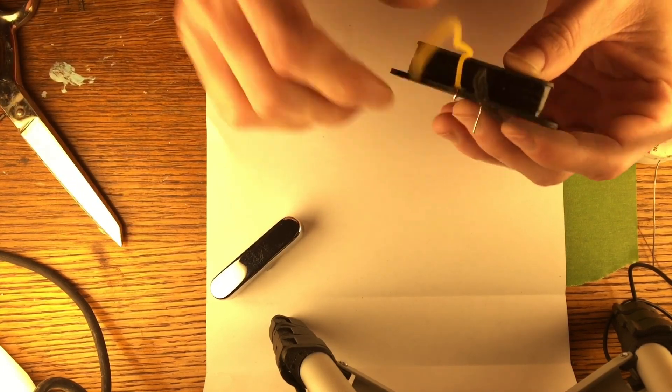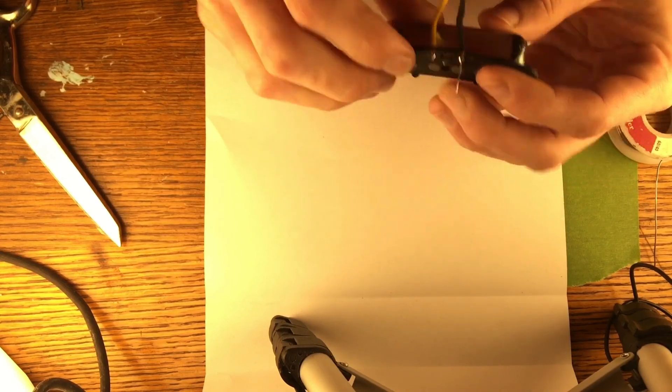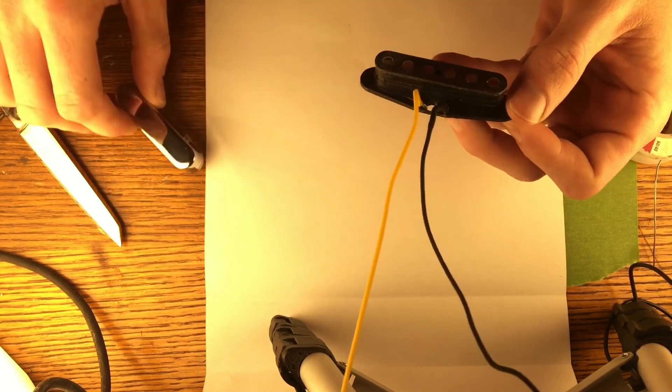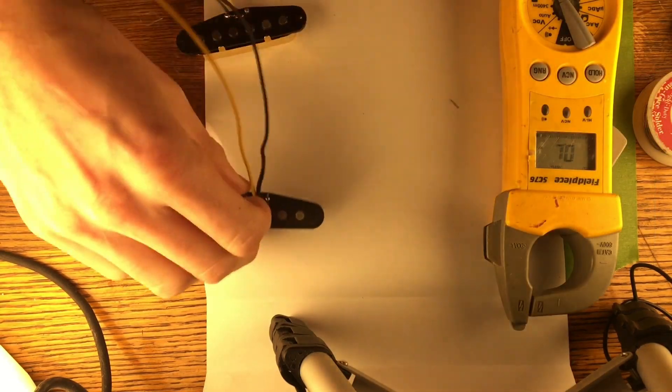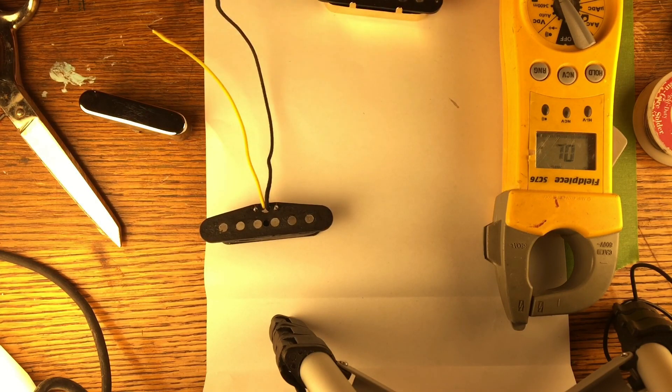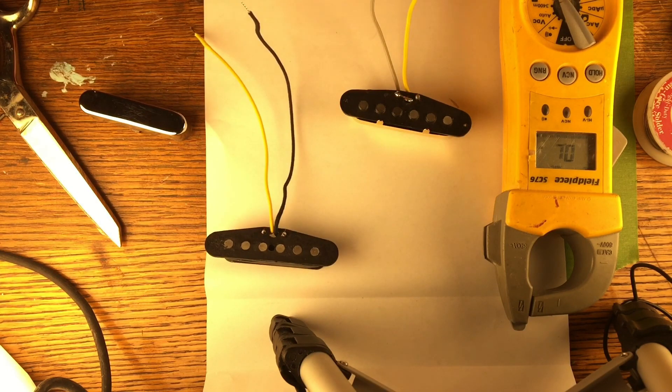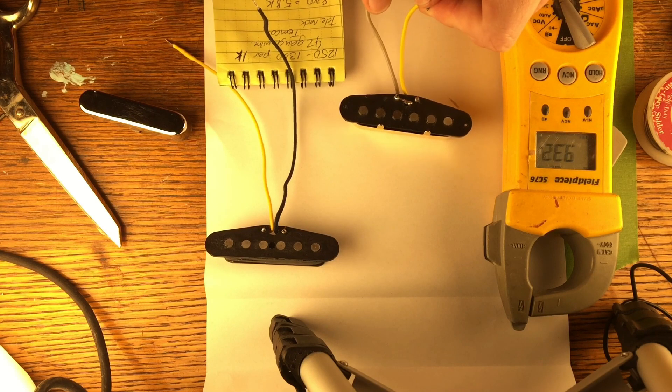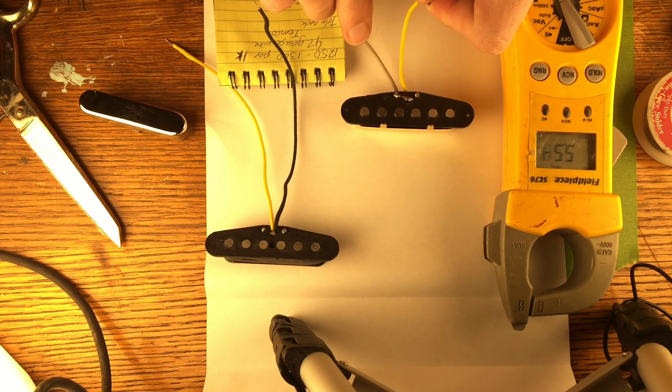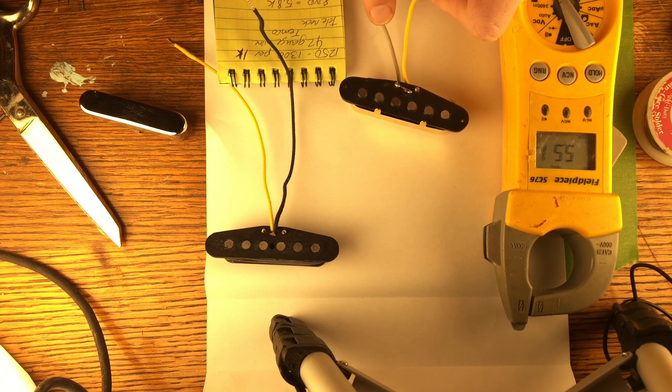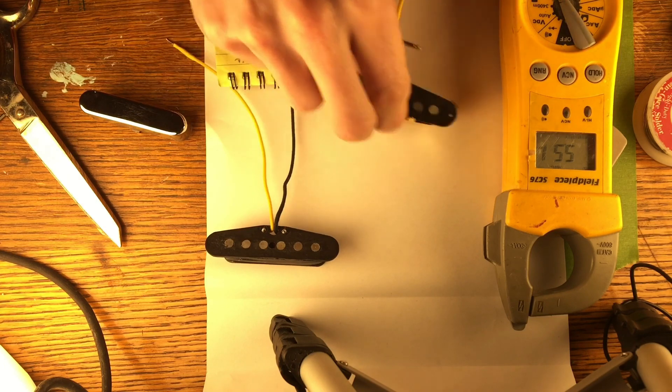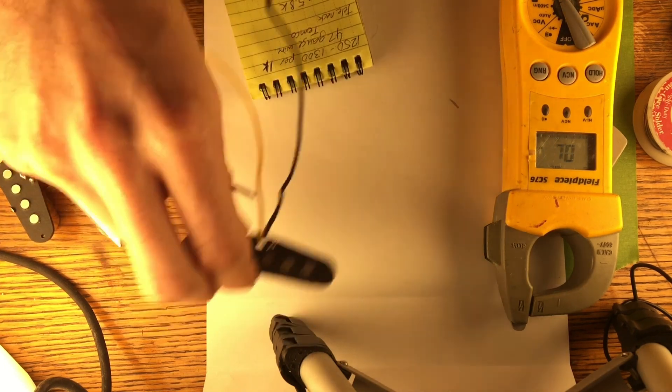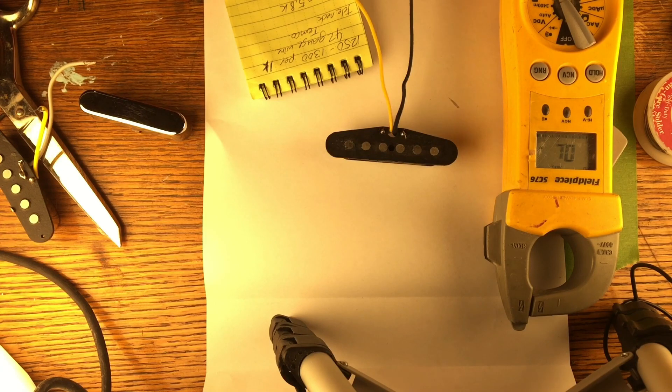This wire here will actually go, once I get this on here, actually go back and solder to that so we'll have a ground. This pickup here was the last one that I did and this one has 8,000 windings on it. It's got five point five one somewhere in there. And this is the one we just wound, and we put 8,200 wraps, windings, and have 5.9K.